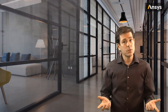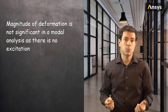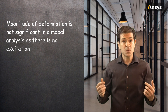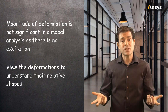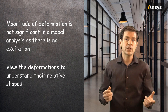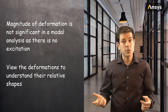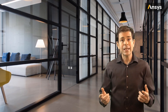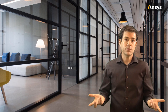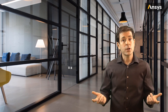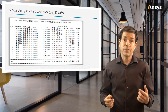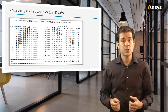Recall that the magnitude of deformation is not significant in a modal analysis and there is no excitation. We have not specified any loading on the building, so we just view these deformations to understand their relative shapes, not their magnitude or degree to which they deform. Looking at these shapes, which are the most significant? We can use our intuition, but we can also use quantities such as the participation factor and the effective mass, which we introduced in a preceding lesson.